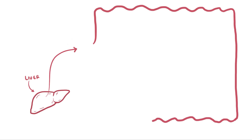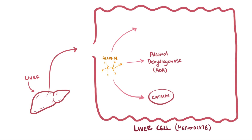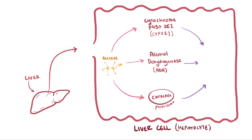Once in the liver cells, or hepatocytes, the alcohol can take one of three pathways. One involves an enzyme called alcohol dehydrogenase, or ADH, and this happens in the cytosol of the cell. Another involves a catalase inside organelles called peroxisomes, and a third involves being converted by the enzyme cytochrome P4502E1, sometimes shortened to CYP2E1. All three of these pathways lead to the conversion of alcohol to acetaldehyde.